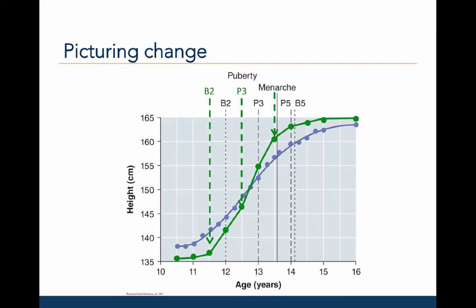Second, another individual may show a very different pattern of development. Here I show a second person in green. The green person starts off at age 10 and a half and is shorter than the person in blue. However, the person in green has a much more dramatic increase in height from ages 11 and a half to 14, and ends up a bit taller than the person in blue. In addition to her change in height being different, the person in green also has different timing of the various pubertal milestones, happening at different ages compared with the person in blue.